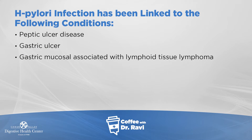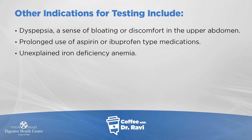The other interesting thing is that prolonged infection with H. pylori can cause a type of cancer called lymphoma — it's called gastric mucosal associated lymphoid tissue lymphoma, or maltoma. There are other things it can cause. For example, people who are on prolonged use of ibuprofen or aspirin, if there is associated H. pylori infection, that can cause ulcers.